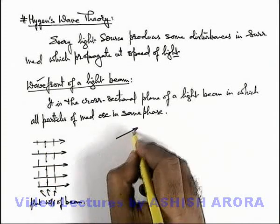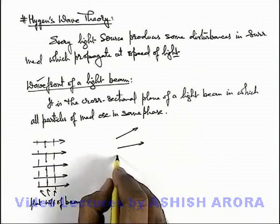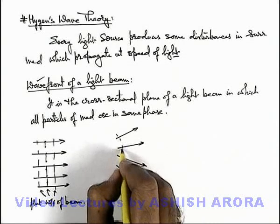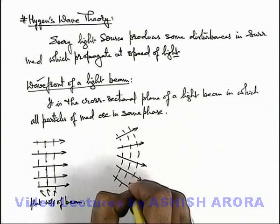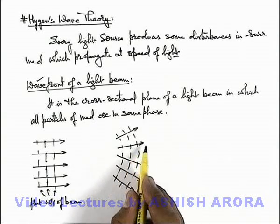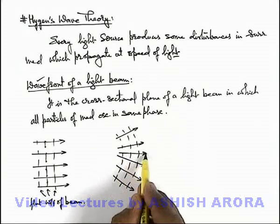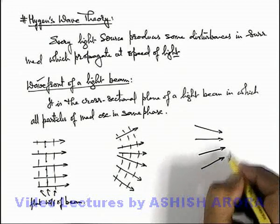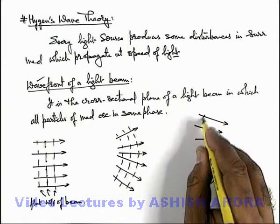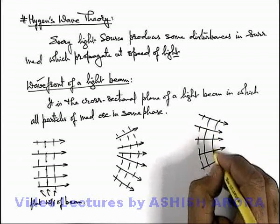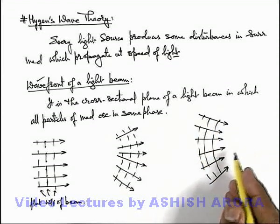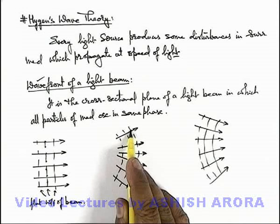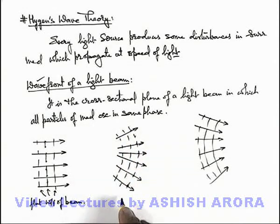Similarly, if we have a diverging light beam, the wave front of such a beam is convex in shape, because we always assume that light propagates in the direction perpendicular to the wave front. In the case of a converging light beam, the shape of the wave front would be concave when seen from the direction against the propagation of light. So all medium particles oscillating within a wave front are assumed to be in the same phase, according to the definition of wave front.